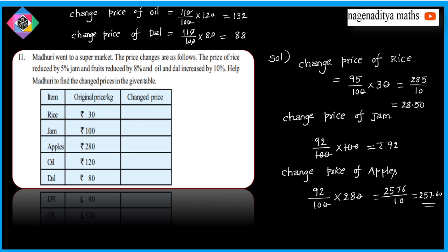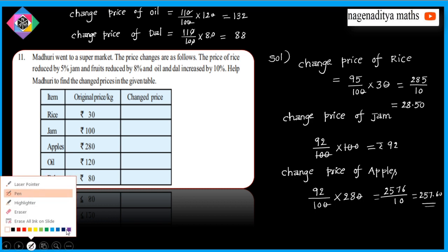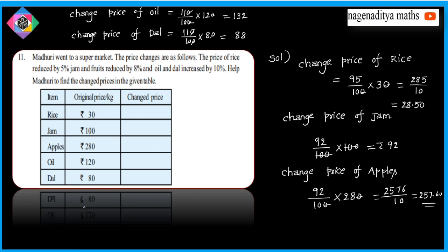So 80 rupees, it is 88 rupees. If you want to complete the table: 30 rupees, then decrease in the market, so the changed price is 28 rupees 50 paise.